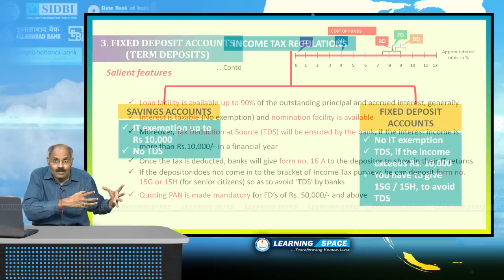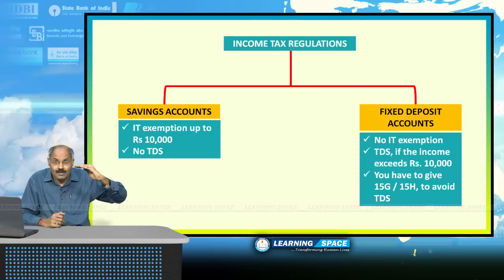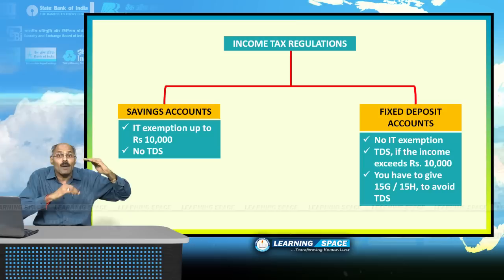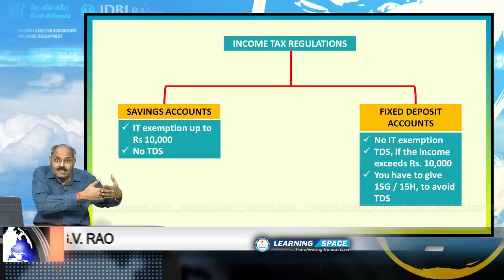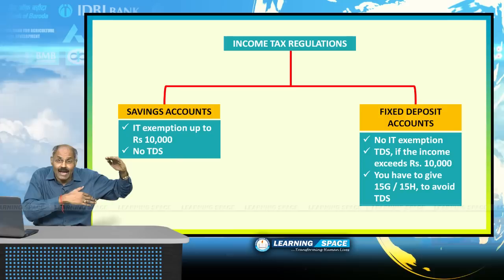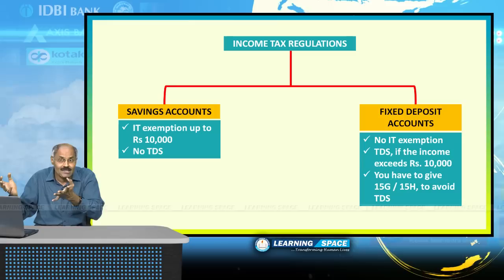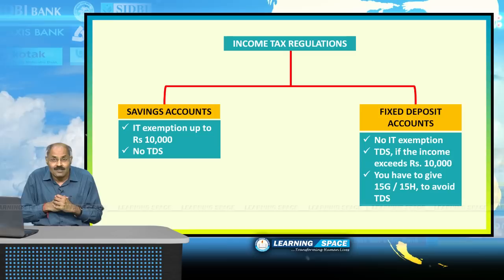In savings bank accounts, interest income up to 10,000 rupees is exempted from income tax. However, the entire interest income in fixed deposits is taxable — you have to pay tax on every paisa earned as interest in a fixed deposit account. The government does not provide any exemption for fixed deposit interest income, unlike the savings bank account exemption.